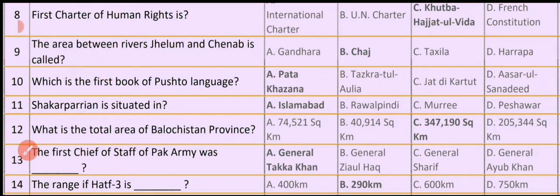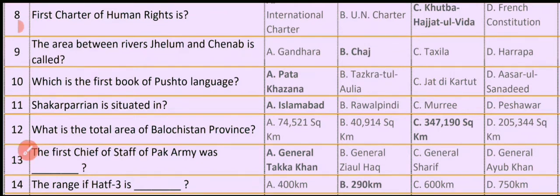Question No. 9. The area between River Jehlam and Chanab is called Option A. Gandhara Option B. Chhaj Option C. Taxila Option D. Harappa. So the correct option is Option B: Chhaj.